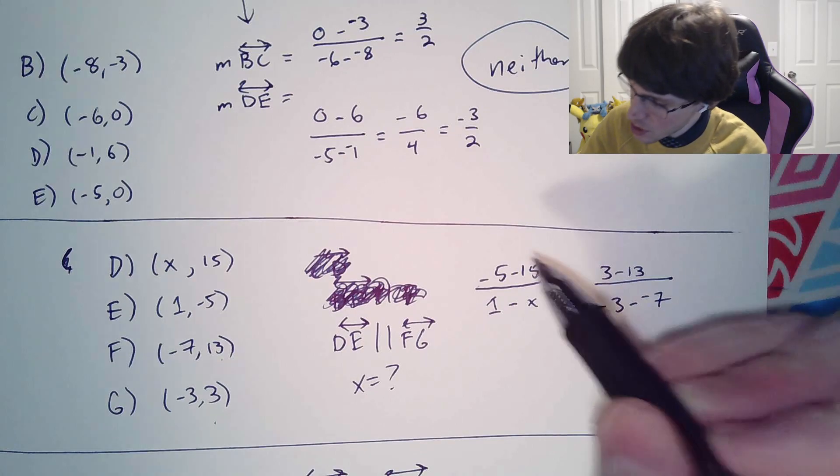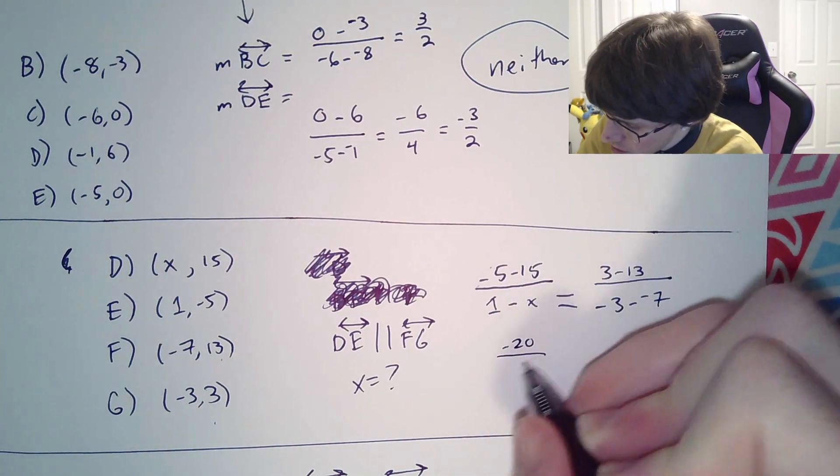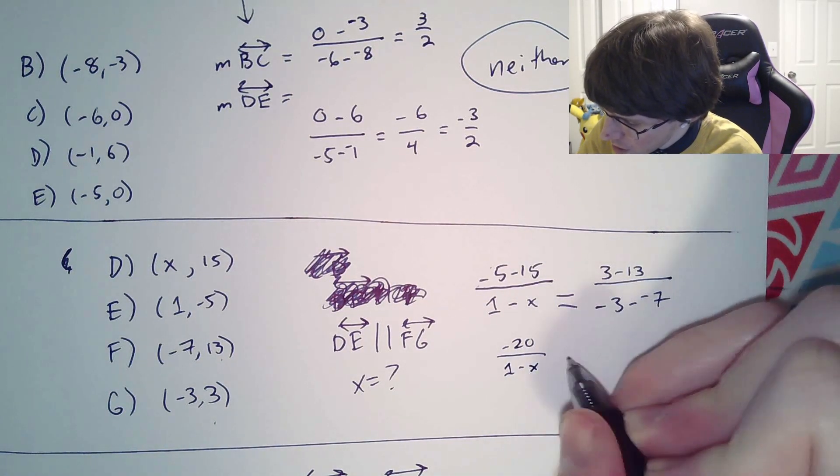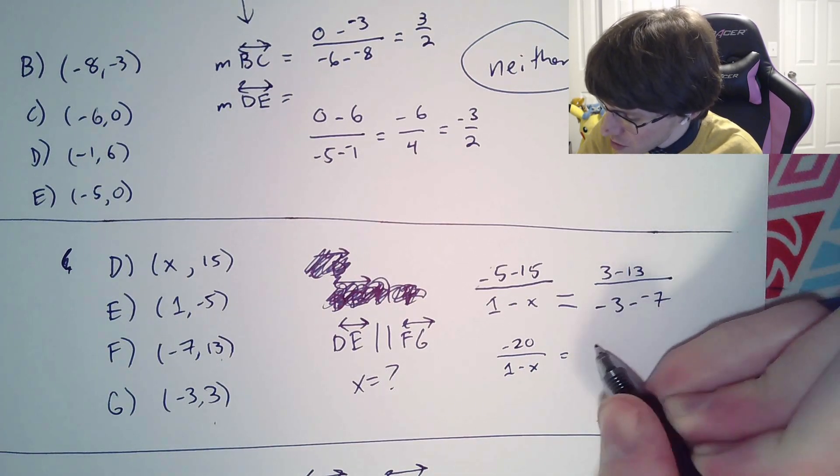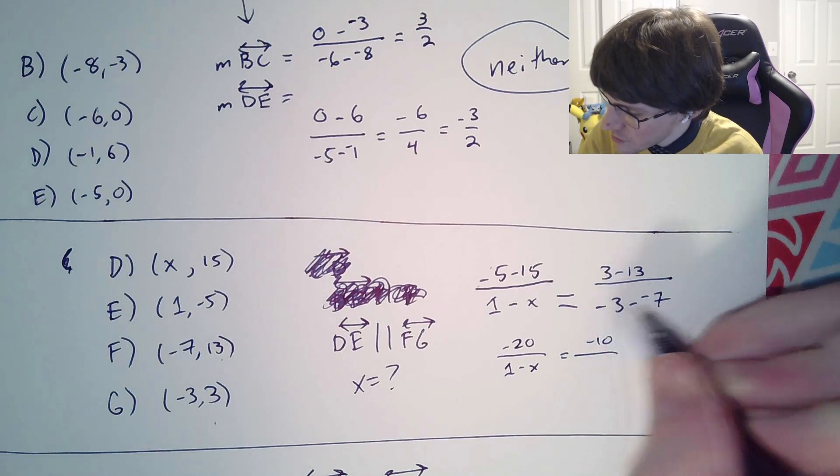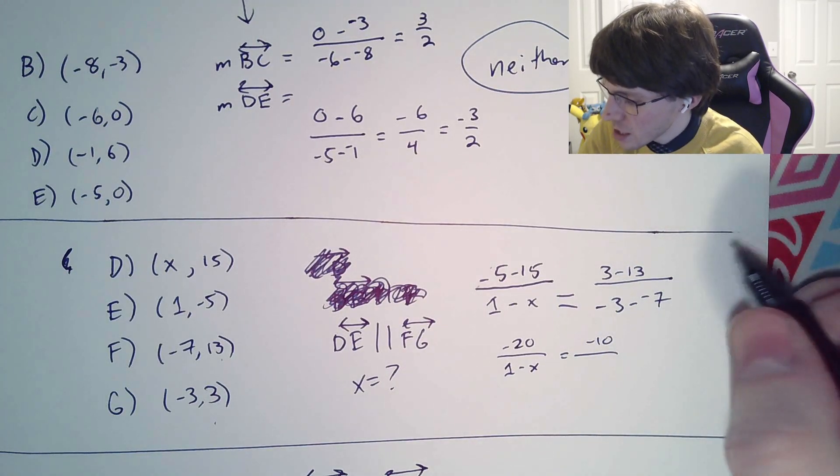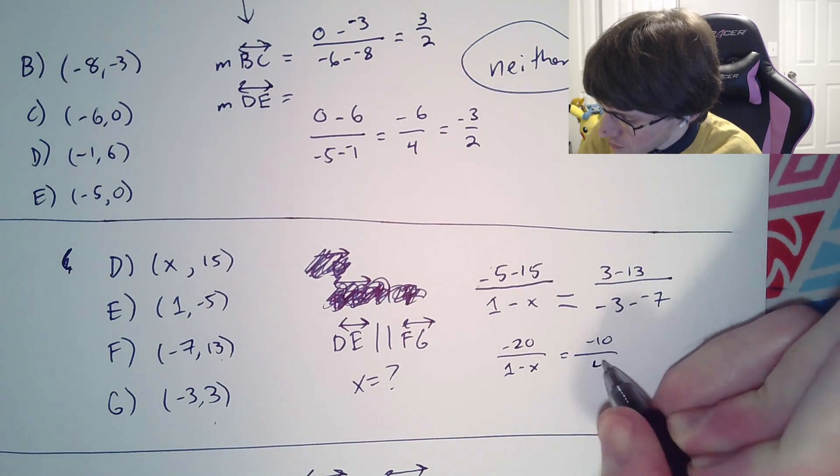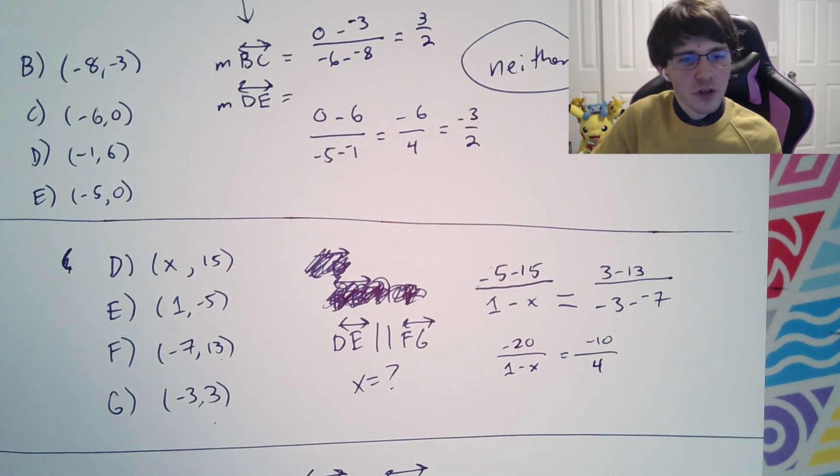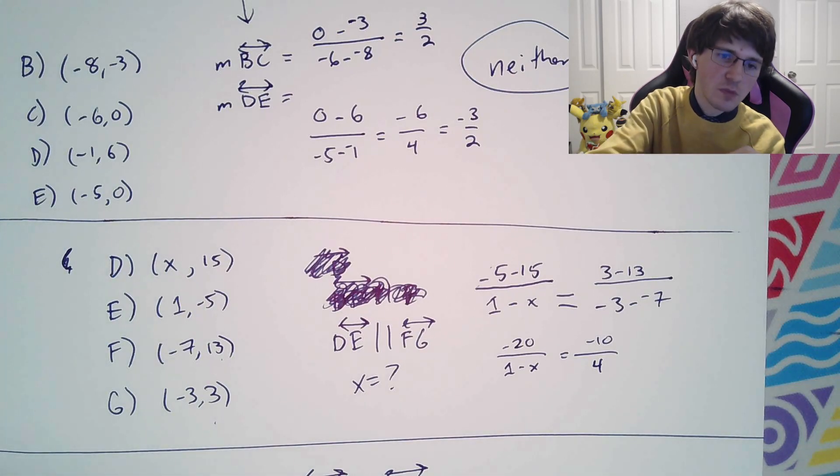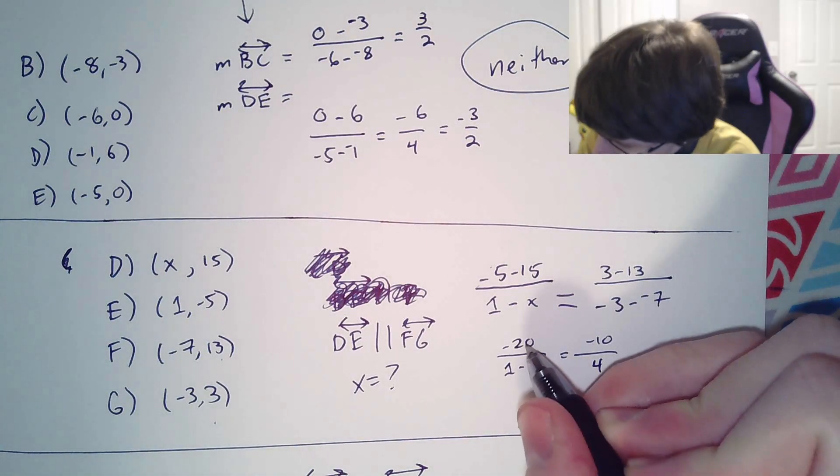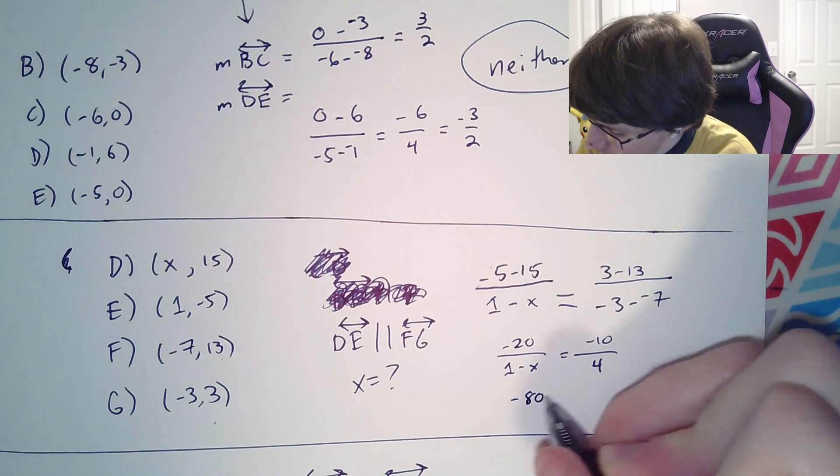And now we just have to simplify and solve this problem, kind of like a regular algebra problem. So to simplify this one, let's do negative 5 minus 15. That's going to give us negative 20. Remember to use a calculator anytime you have those negatives if you're struggling. 3 minus 13 is negative 10. And negative 3 minus negative 7 is going to be a positive 4.